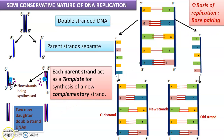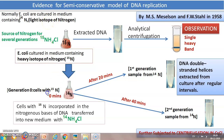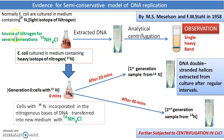To prove that semi-conservative replication is correct and the other two models — conservative and dispersive — are wrong, Meselson and Stahl used E. coli as their model organism. Bacterial cells require a nutrient medium with sources of nitrogen, carbon, oxygen, etc. Before starting the experiment, they wanted all E. coli cells to contain heavy isotopes of nitrogen, because nitrogen is a key component of DNA found in nitrogenous bases — purines and pyrimidines.